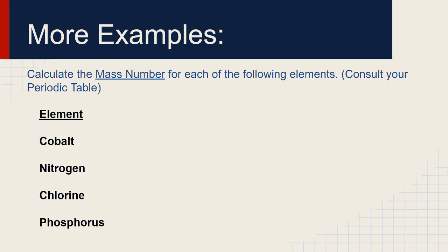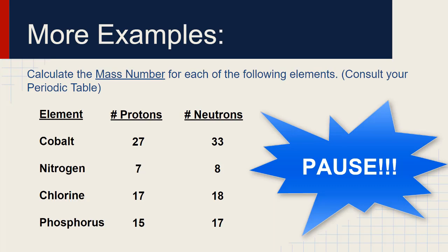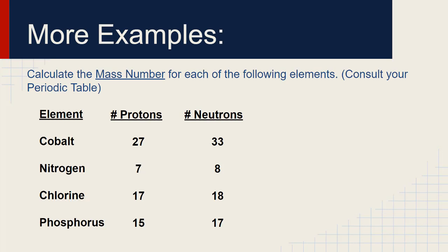Now find the mass number. Remember, the mass number is protons plus neutrons. The number of protons and neutrons are given — pause the video, figure out the mass number, then restart and we'll see how you did. For cobalt, your mass number should be 60: 27 plus 33. For nitrogen, 15: 7 plus 8. For chlorine, 35: 17 plus 18. And for phosphorus, 32: 15 plus 17.